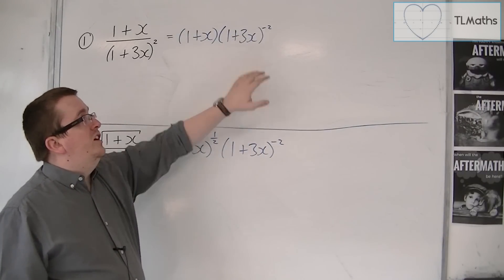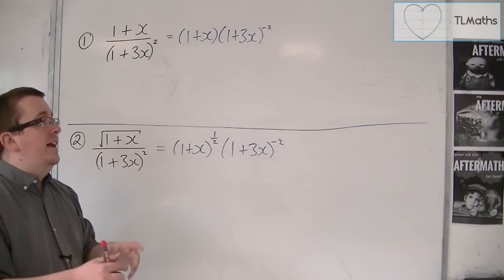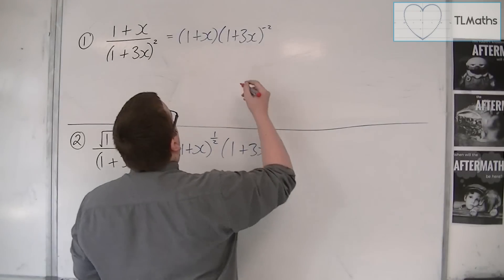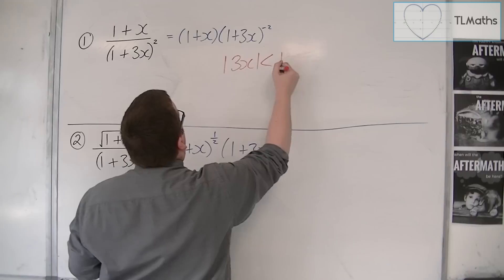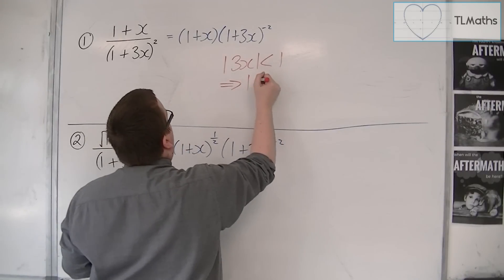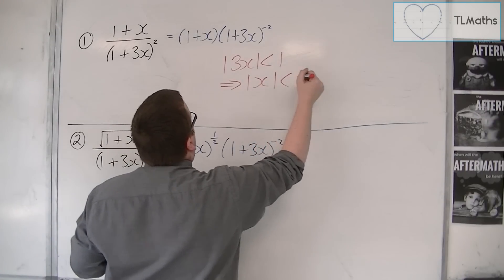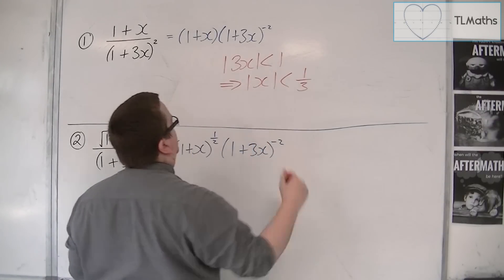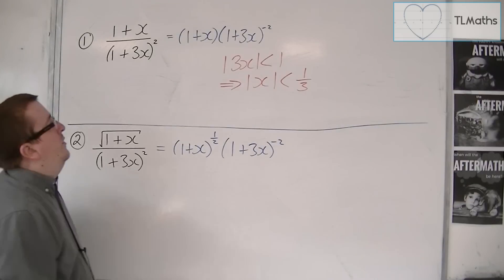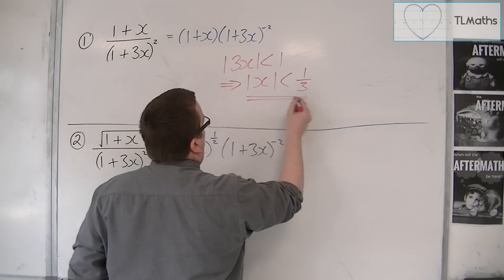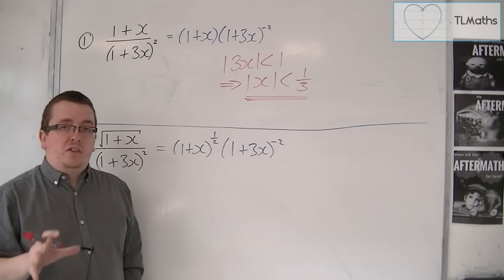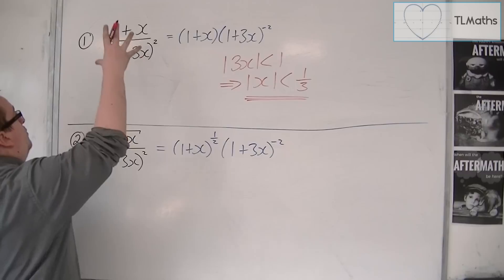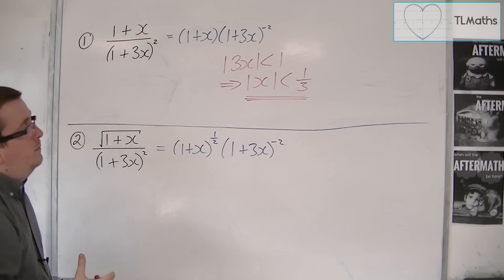So I know that this can only be valid when we have mod x is less than 1. And so that means that we have mod of 3x is less than 1, which is the same as mod of x being less than 1 third. And so that is what I'm looking for here. So x must be between minus 1 third and 1 third for this to give you correct values.